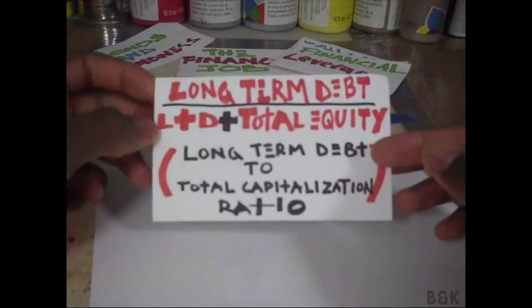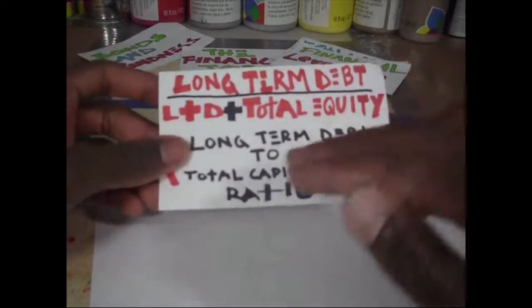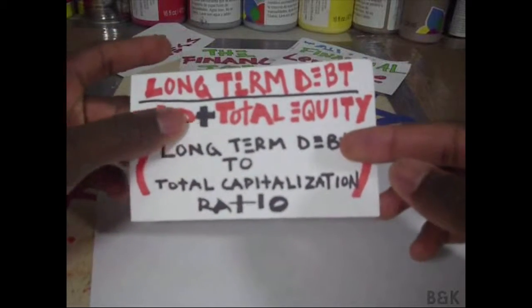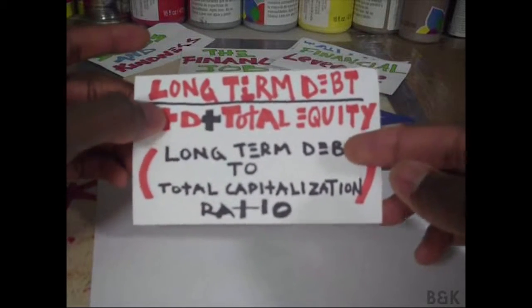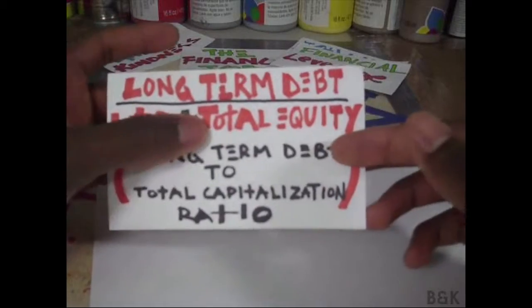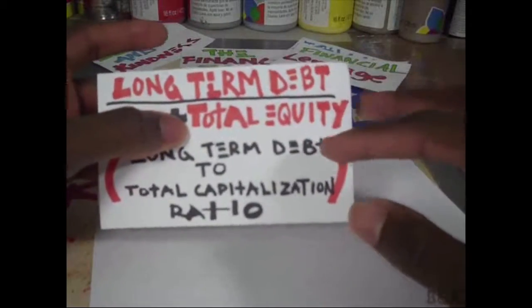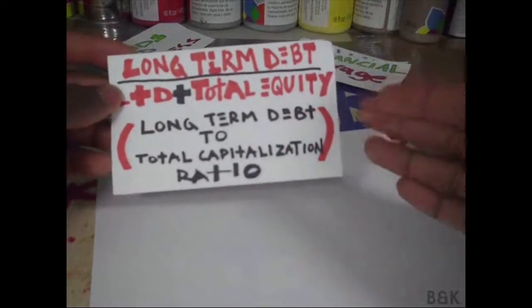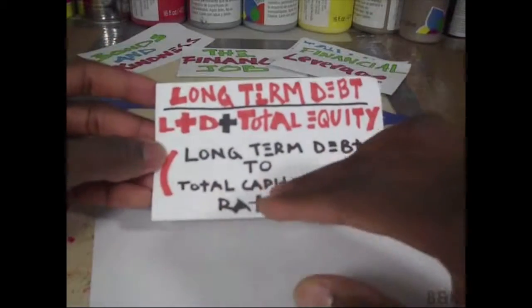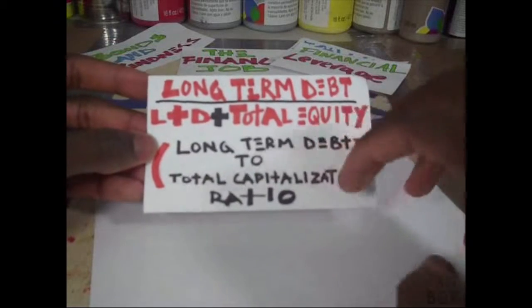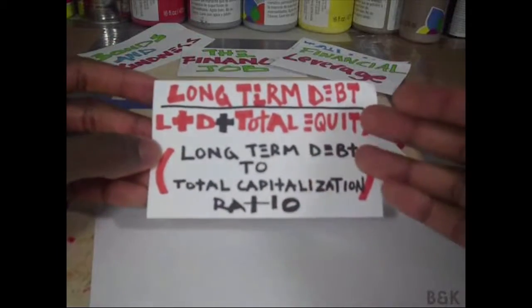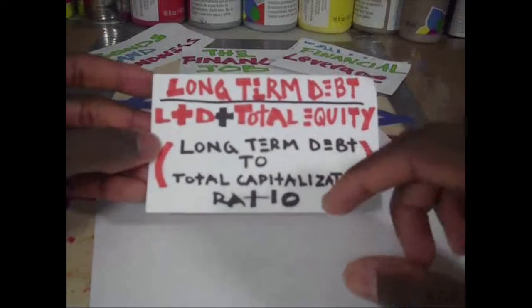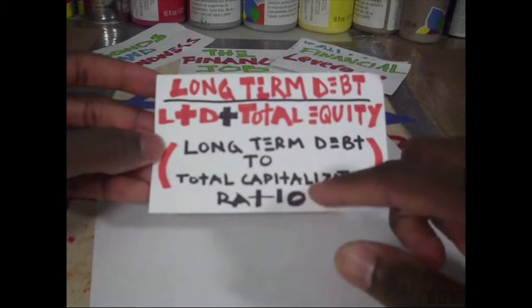But here it's very specific — 'total capitalization' means we look at long-term debt plus total equity. For some reason we're singling out long-term debt and combining it with total equity. This shifts to a less familiar use of the word 'capital,' which is where my issue lies.